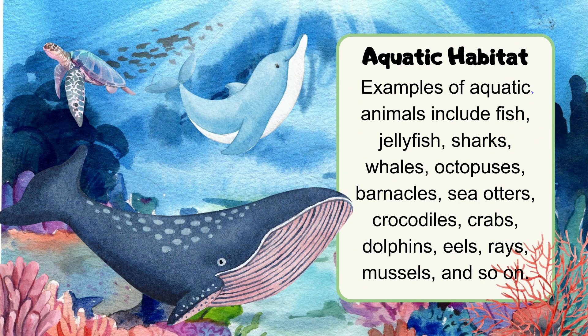Examples of aquatic animals include fish, jellyfish, sharks, whales, octopuses, barnacles, sea otters, crocodiles, crabs, dolphins, eels, rays, mussels, and so on.